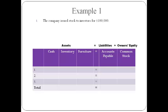The first transaction is the issuance of stock to investors. First, identify what is exchanged. Cash is received and common stock is given in exchange. Cash is an asset and common stock is an owner's equity. Both sides increase $100,000. The amounts are put in the appropriate columns and the accounting equation stays in balance.